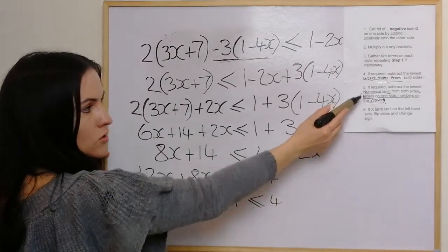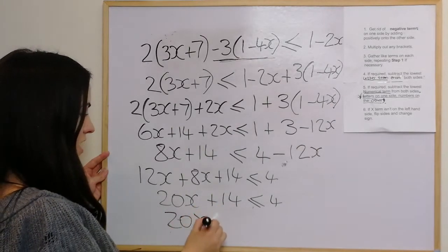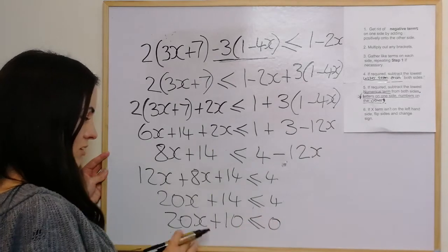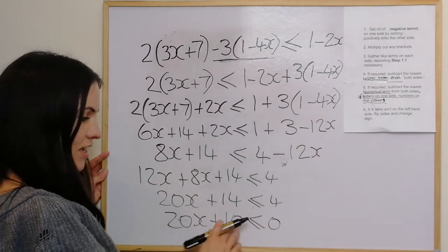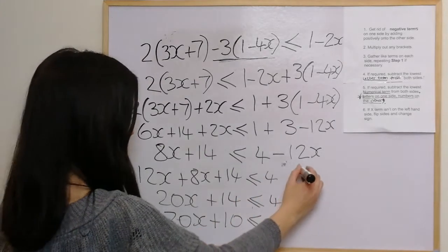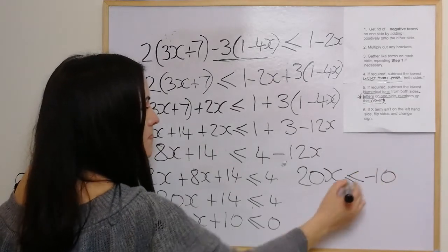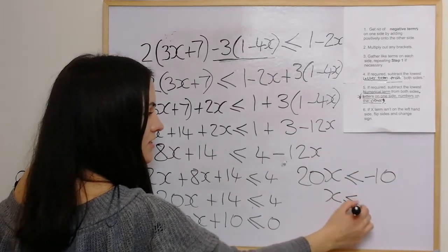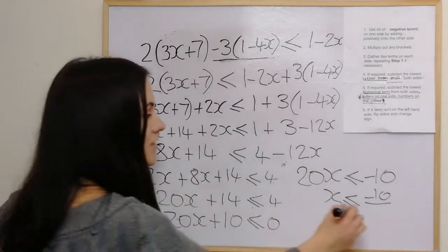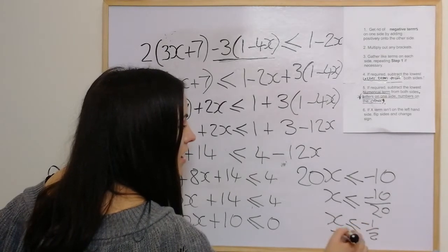Subtracting the lowest numerical term: subtracting 4 from both sides gives 20x plus 10 is less than or equal to 0. We need the x term on the left and numbers on the right, so 20x is less than or equal to negative 10. Therefore x is less than or equal to negative 10 over 20, which simplifies to x is less than or equal to negative one half.